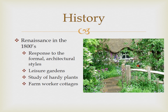In the 1800s, there was a renaissance of sorts in response to the formal architectural styles, both architecturally and in landscape design, that were prevalent in the late 1700s and early 1800s. Additionally, leisure gardens first started popping up in Europe as wealth became more common. This allowed for the study of plants, including hardy plants and long-blooming plants, and with the continued practice of farmworker cottages — all of these things led to a revival, or a renaissance of sorts, of the English cottage garden.